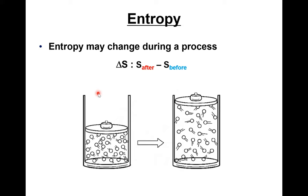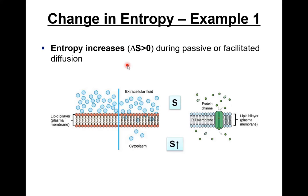Like enthalpy, entropy can change from before a process takes place to after. For example, in this case there is a piston that gets expanded after the process. You can measure the entropy after the process, subtract the one from before, and get the change in entropy, which will contribute to the Gibbs free energy of this specific system.